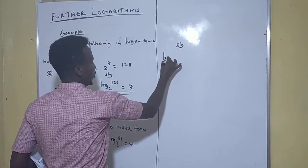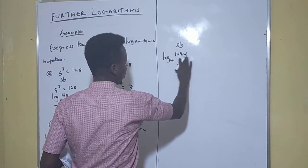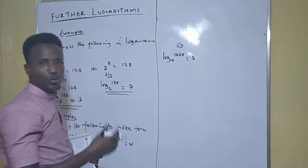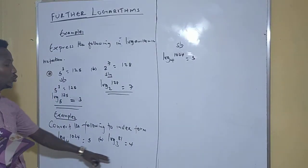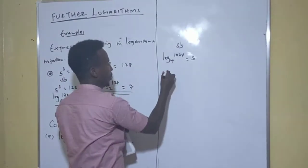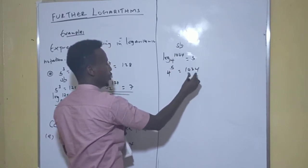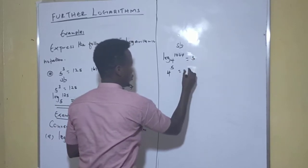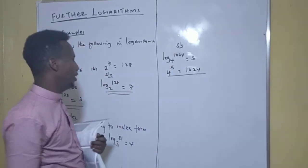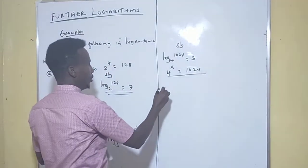The first one: log base 4 of 1024 is equal to 5. What are we going to do? We eliminate the log, then interchange these two positions again. So it will be 4 to the power 5 equals 1024. You can confirm from the calculator — this is indeed 1024. This is the final answer. We are eliminating the log, then interchanging the two positions and retaining our base.